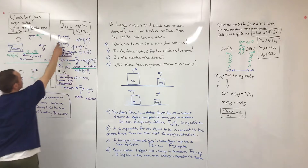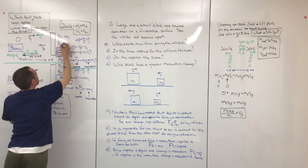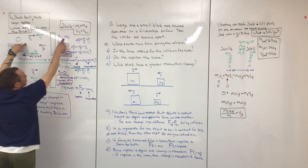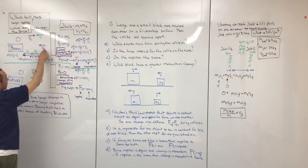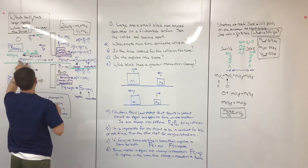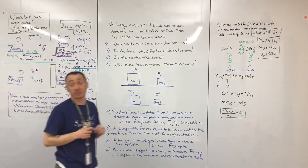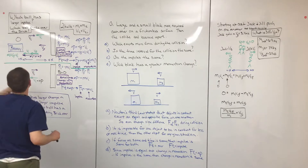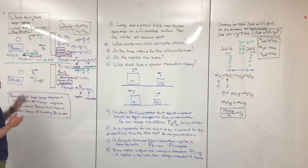For the bouncy ball, the initial momentum is in the positive x direction, so we write it as mvi. The final momentum is in the negative direction — that velocity is telling us the direction — so that's negative mv. The final momentum is negative because of the direction it's in, and the initial momentum is positive. Remember, momentum is a vector, so we're using vector signs.